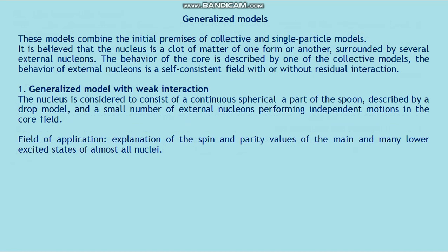Generalized models. These models combine the initial premises of collective and single-particle models. It is believed that the nucleus is a core of nuclear matter surrounded by several external nucleons. The behavior of the core is described by one of the collective models, while the behavior of external nucleons is described by a self-consistent field with or without residual interaction. First: generalized model with weak interaction — the nucleus consists of a spherical core described by the drop model plus a small number of external nucleons performing independent motions. Both the external nucleons and the core can be excited through surface oscillations. Applications include explanation of spin and parity values of the ground and many lower excited states of almost all nuclei.